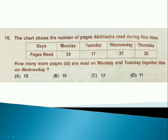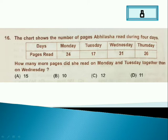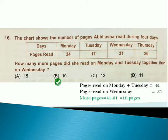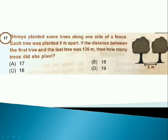The chart shows the number of pages Abhilasha read during the four days. How many more pages did she read on Monday and Tuesday together than on Wednesday? Answer is option B. Pages read on Monday plus Tuesday is 41, and pages read on Wednesday is 31. So more pages is 41 minus 31 is 10 pages.